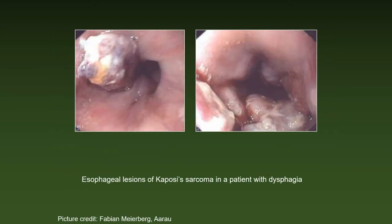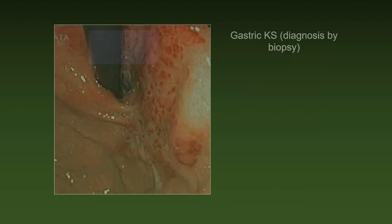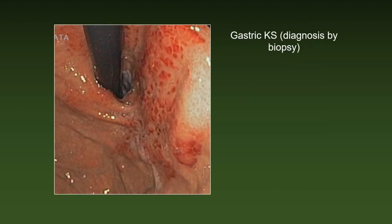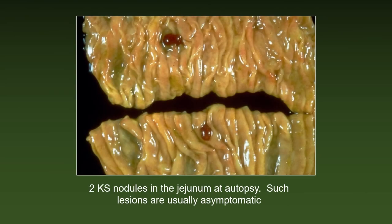We have seen that oral lesions are very frequent in KS. The rest of the GI tract may also be involved. In general, the involvement is asymptomatic. This patient with esophageal lesions, however, complained of dysphagia. An example of diffuse gastric involvement, where diagnosis was established by biopsy. Two KS nodules in the jejunum at autopsy — these lesions were asymptomatic.